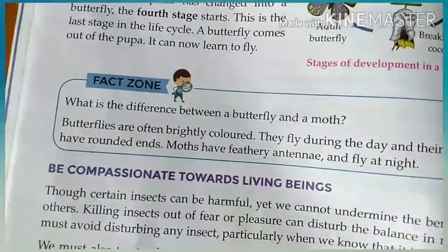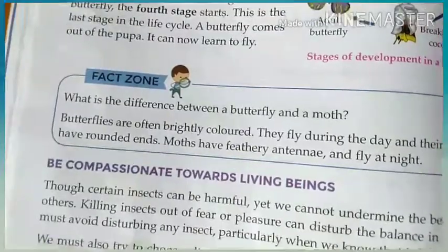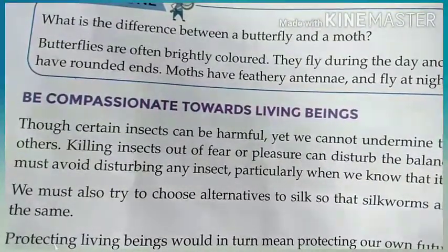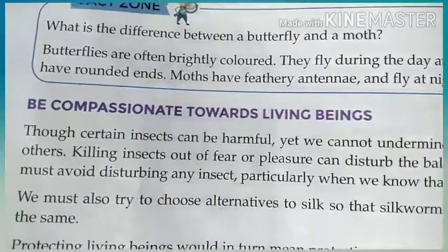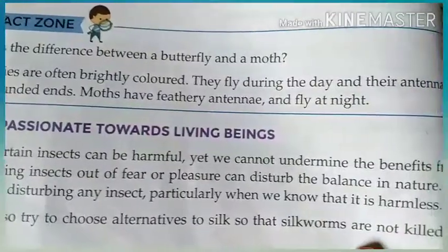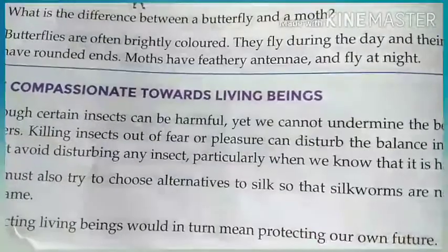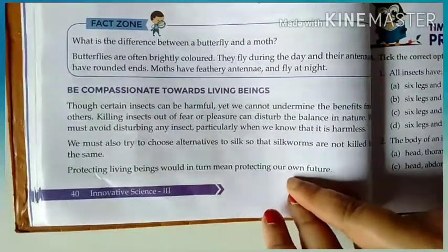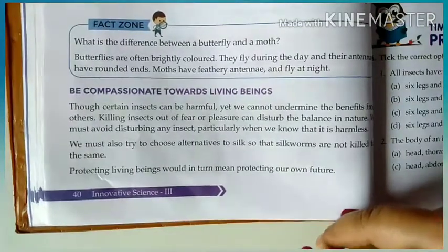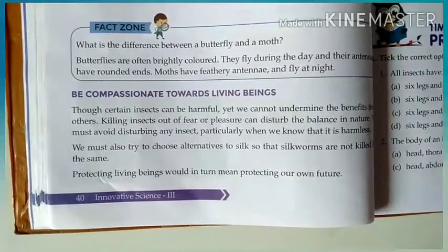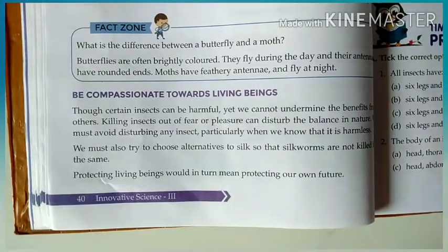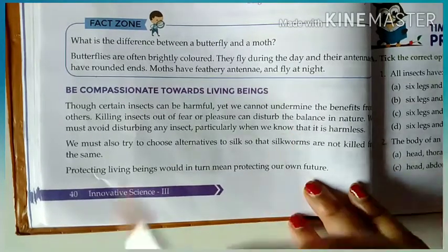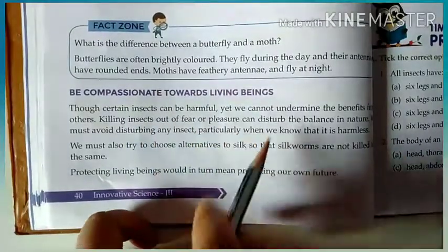We should be compassionate towards living things. Compassionate means we should be loving and caring towards all living beings. Though certain insects can be harmful — mosquito bites may cause irritation, pain, and swelling — we cannot ignore the benefits they provide. Killing an insect out of fear or for pleasure can disturb the balance in nature.